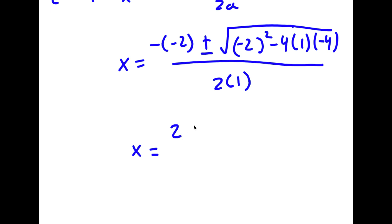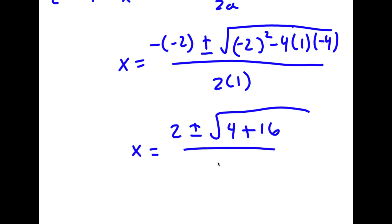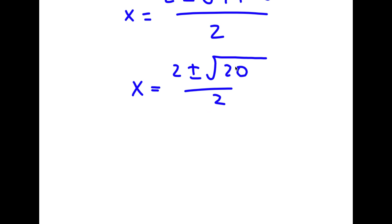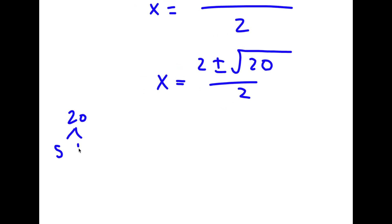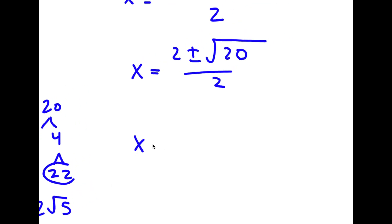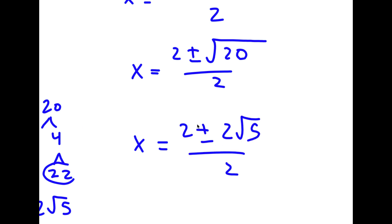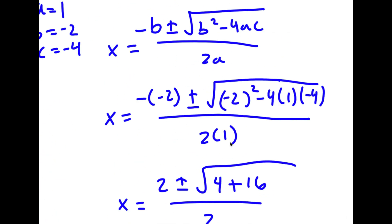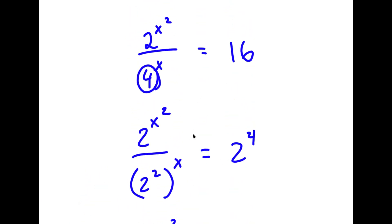So this is equal to 2 plus or minus the square root of 4 plus 16 all over 2, which is equal to 2 plus or minus the square root of 20 over 2. The square root of 20 is the same as the square root of 5 times 4, and 4 is 2 times 2, so this is 2 root 5. So now I have x is equal to 2 plus or minus 2 root 5 over 2. Dividing by 2, I get x is equal to 1 plus or minus the square root of 5. So this is my solution.